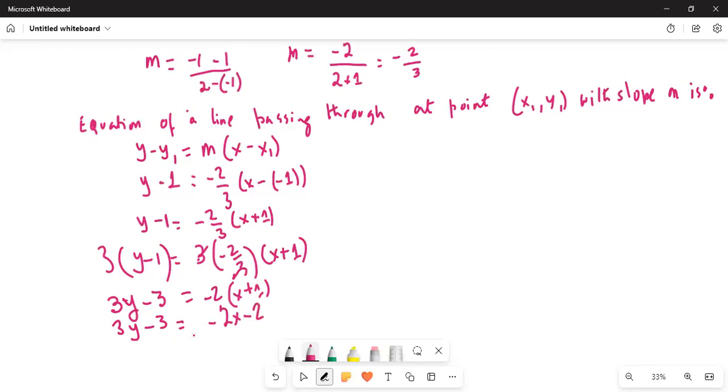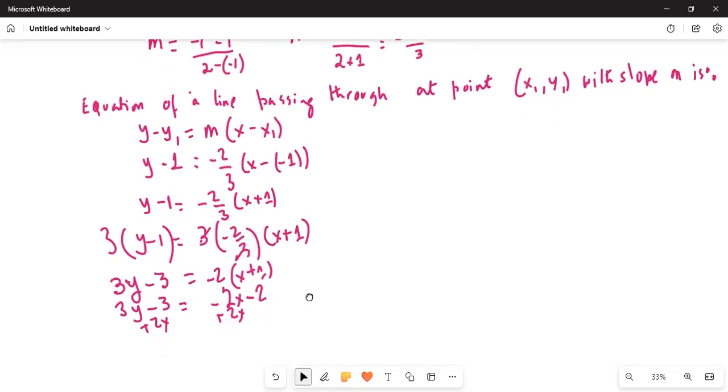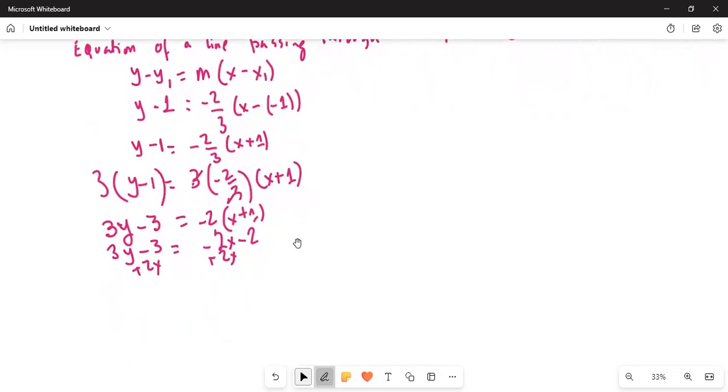So if I add 2x on both sides, I get 3y minus 3 plus 2x equals -2.